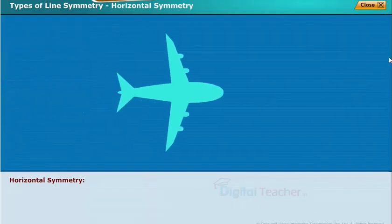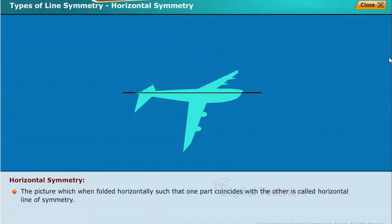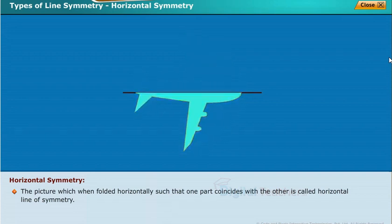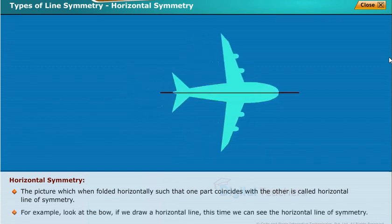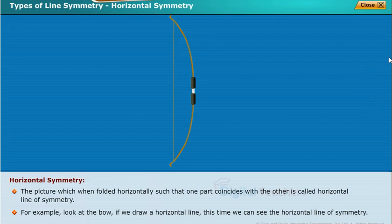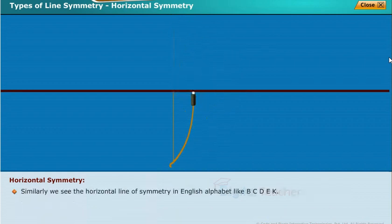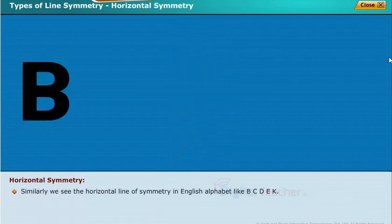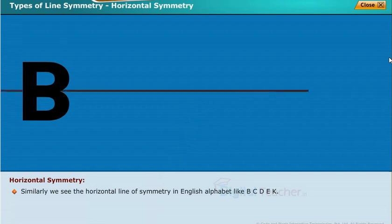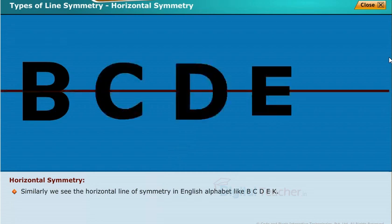Horizontal symmetry: a picture which when folded horizontally such that one part coincides with the other is called horizontal line of symmetry. For example, look at the bow — if we draw a horizontal line, we can see the horizontal line of symmetry. Similarly, we see horizontal line of symmetry in English alphabet letters like B, C, D, E, and K.